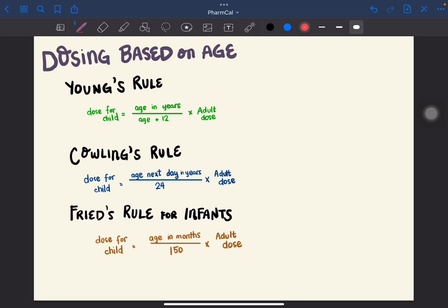There are three formulas that you have to remember: Young's rule, Cowling's rule, and Fried's rule. Now take note that these formulas aren't actually used in clinical practice since body surface area is more accurate. The reason why we're studying this is because it may appear on the board exam. As you can see here, all of the formulas will be multiplied by the adult dose. The only problem that we have to deal with is to memorize these parts and the constants.